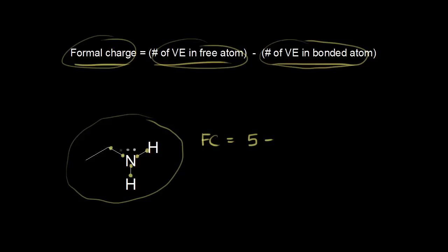Let's go back to the dot structure and look at these bonds. From the bond on the left, nitrogen gets one of those electrons. From the bond on the right, nitrogen gets one electron and hydrogen gets the other. Same for this nitrogen-hydrogen bond: nitrogen gets one electron and hydrogen gets the other. So how many electrons do we have around nitrogen in our drawing? Let's count them up: one, two, three. And then we have a lone pair of electrons on nitrogen, so that's four and five. Nitrogen is surrounded by five valence electrons, so we have five minus five, which equals zero.